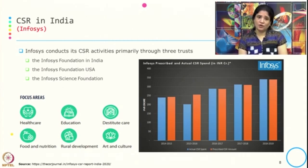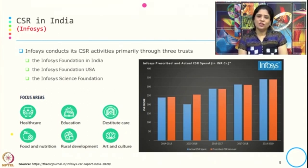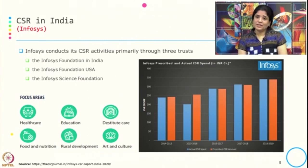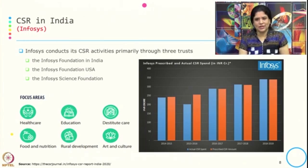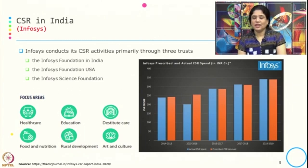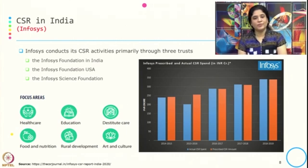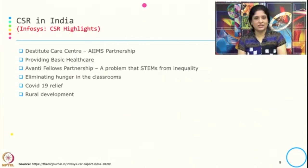To start with, Infosys, a well-known company for CSR, conducts its CSR activity primarily through three trusts: Infosys Foundation in India, Infosys Foundation USA, and Infosys Science Foundation. The focus areas are healthcare, education, and others. This shows their prescribed CSR spending and actual spending over the last 5 years, from 2014-15 to 2018-19 — whatever they prescribed for CSR amount they are mostly spending or close to it, and these are their CSR highlights in healthcare and other initiatives.